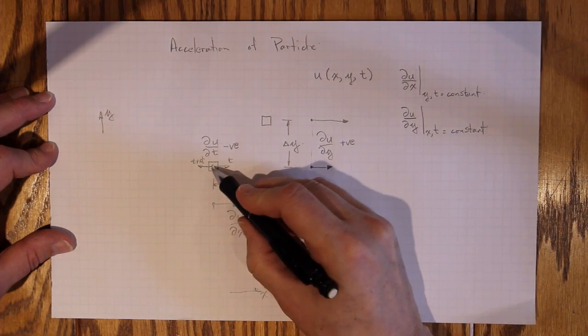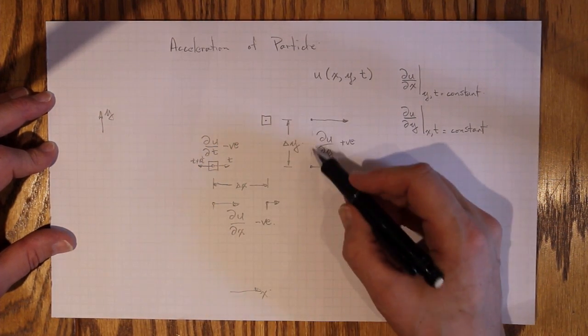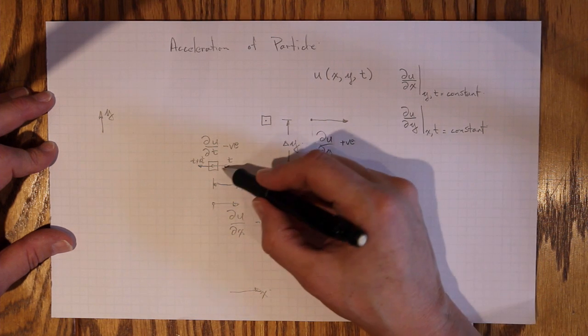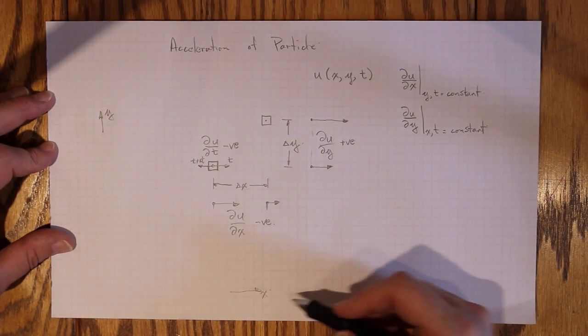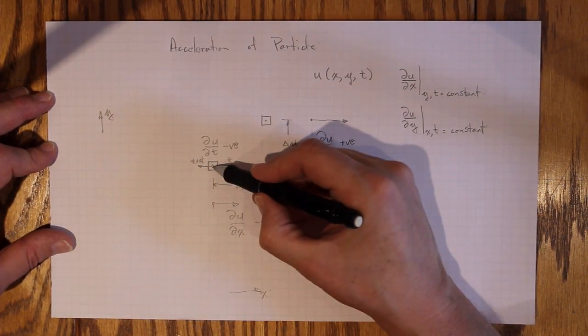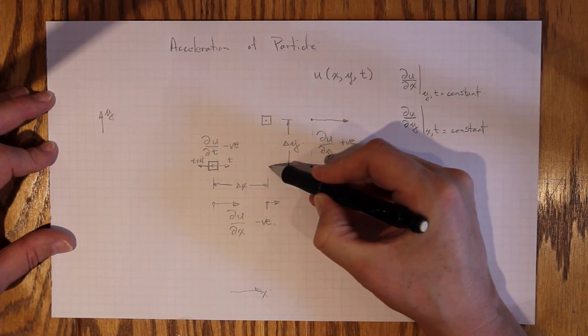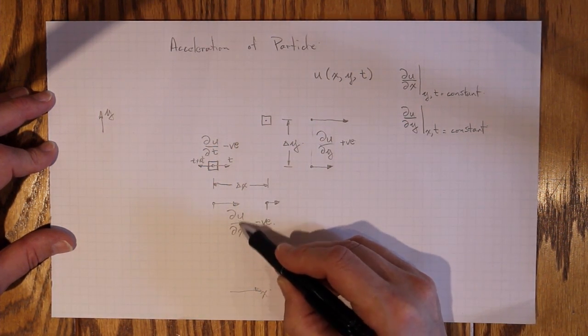So in tracking this individual particle as it moves from here, we need to keep track of the three different changes it undergoes. It will change because things are just changing with time, even if we look at the same location in the Eulerian space defined by our x and y coordinate system.